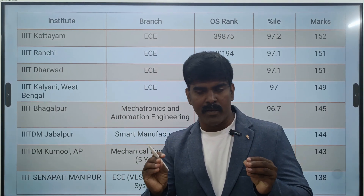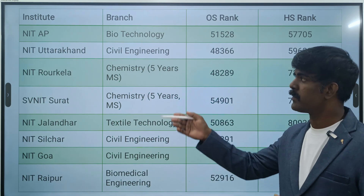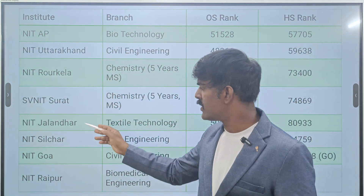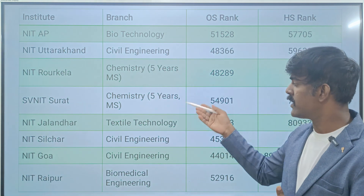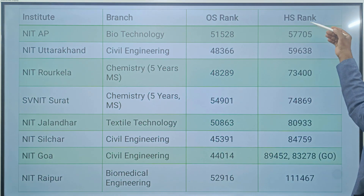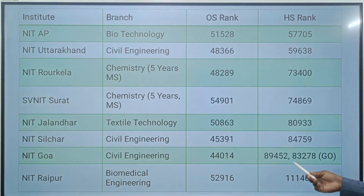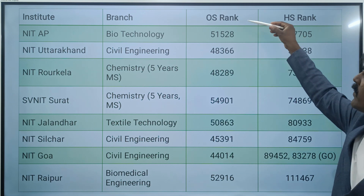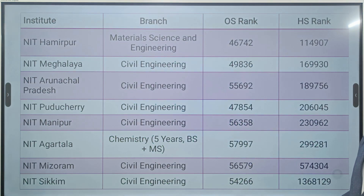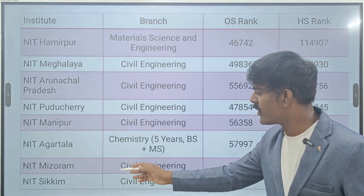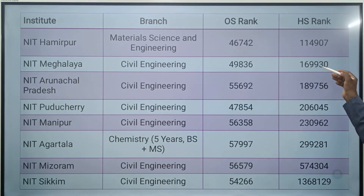Below 90 percentile: NIT AP, Uttarakhand, Manipur, Mizoram, Sikkim, Jalandhar, Silchar, Goa — for Biotechnology, Civil, Chemistry 5-year integrated, Textile Technology, Civil Engineering, Biomedical Engineering. Home state rank for example 1,11,467; NIT AP Biomedical home state 84,000 to 74,000; outside state rank 48,000 to 53,000 for NIT AP, Uttarakhand, Sikkim. For the next set of below 90 percentile — NIT Sikkim Civil Engineering 1,65,000 to 1,99,000; further down 1,69,930; Meghalaya around 1,89,000.